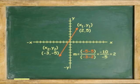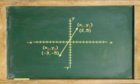The slope is positive 2 or 2 over 1. It doesn't matter which point is point 1 or which point is point 2 as long as we don't mix the coordinates.